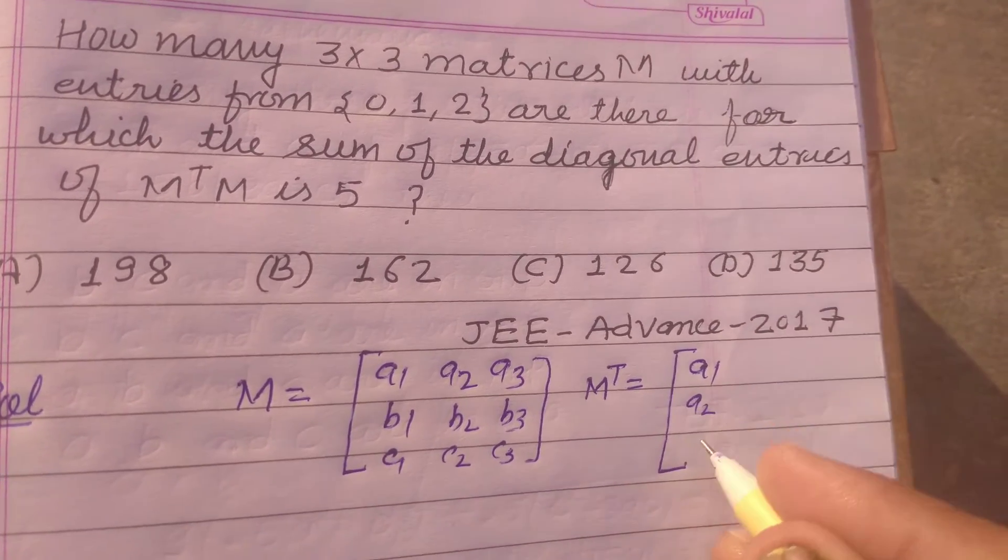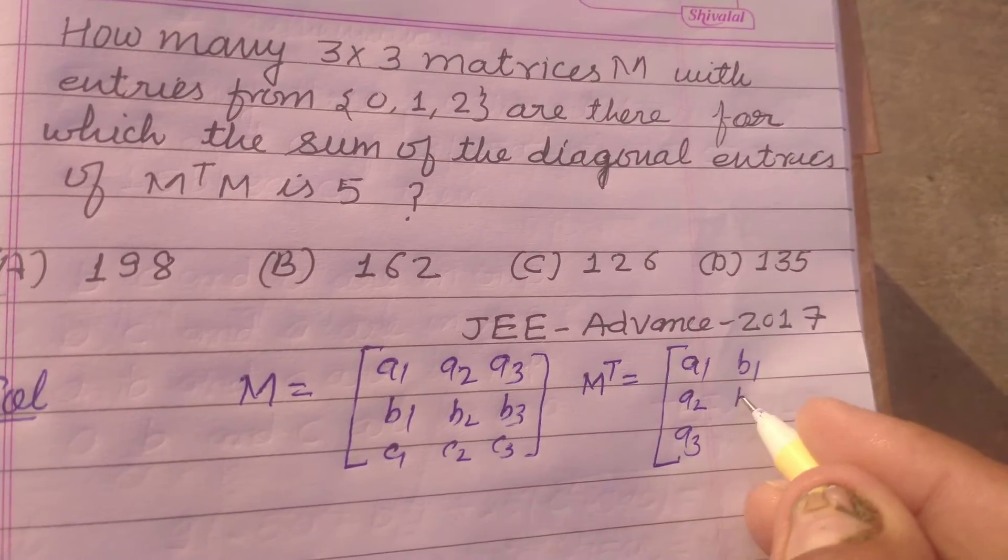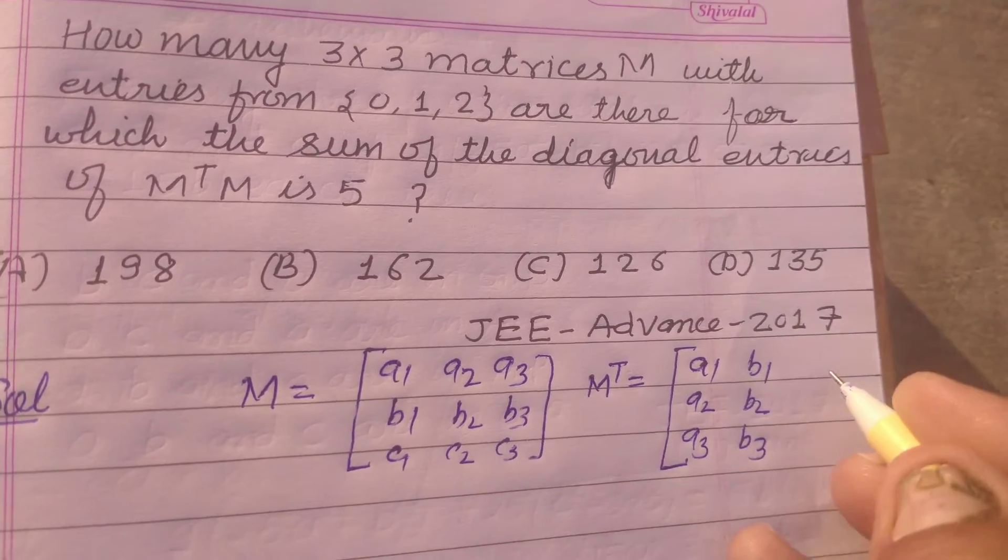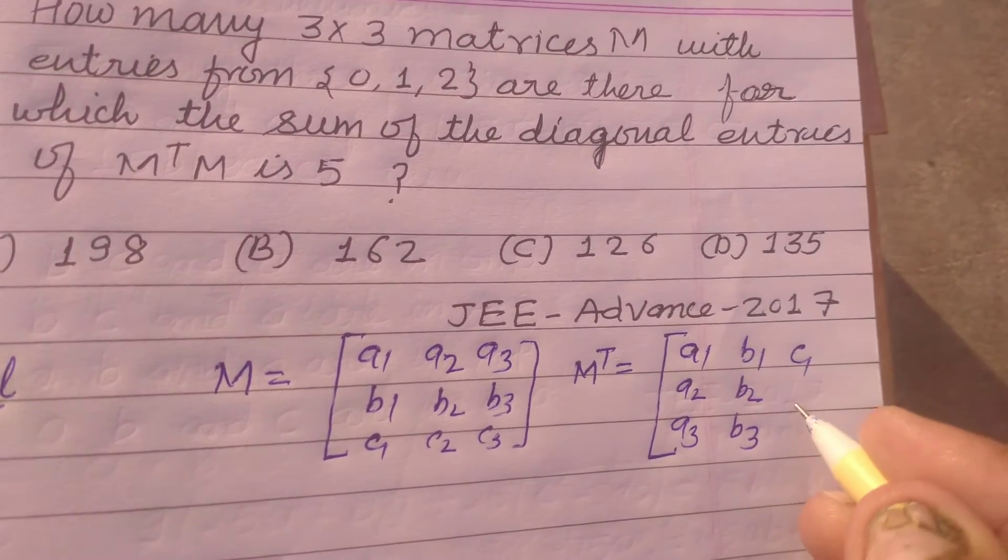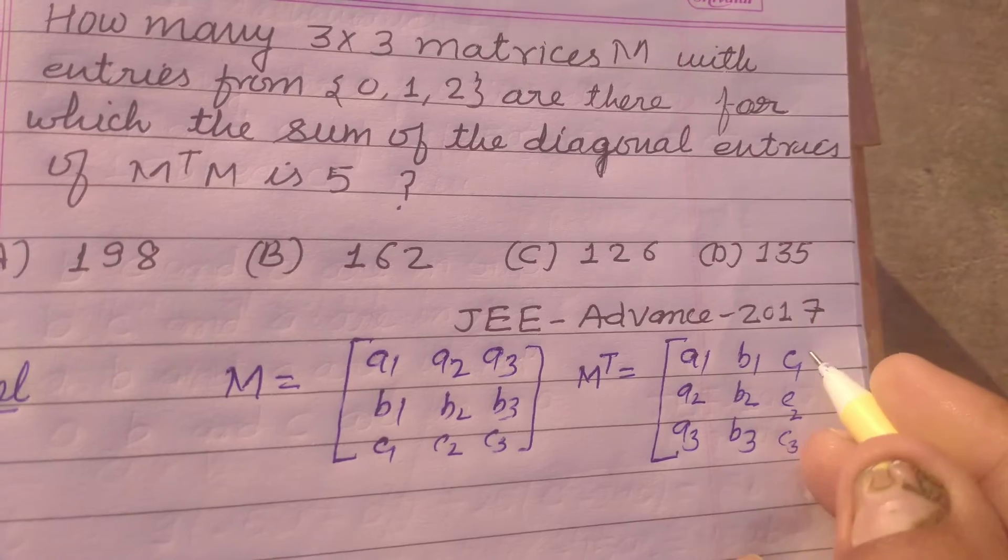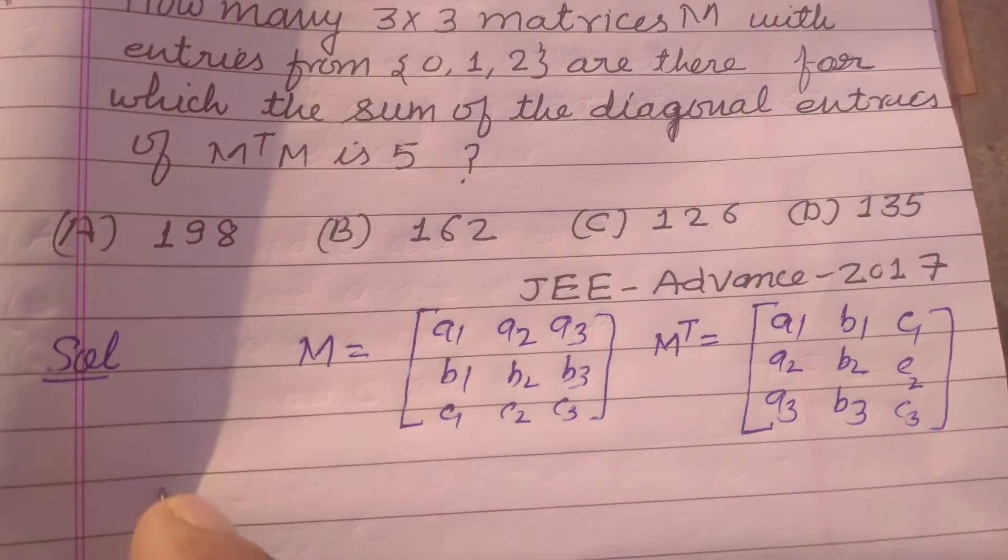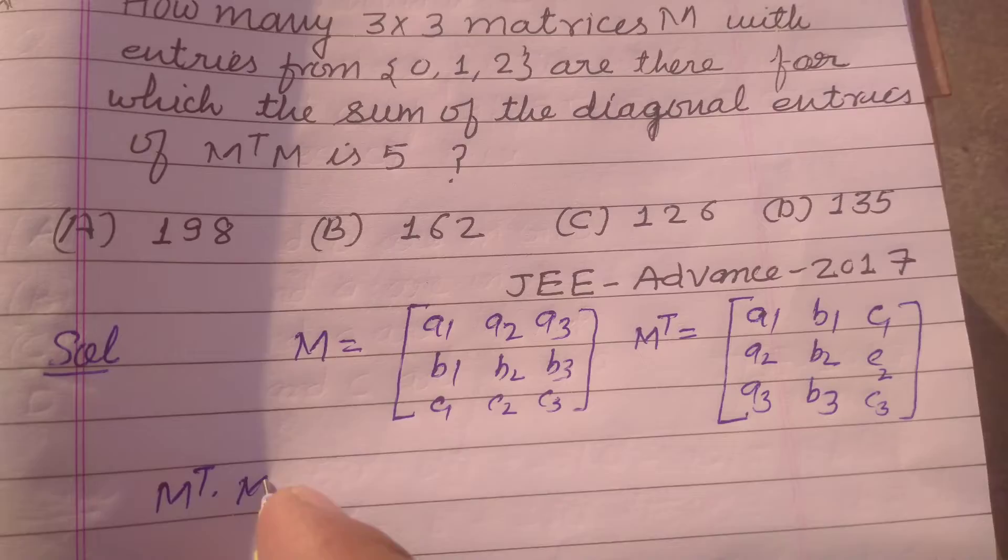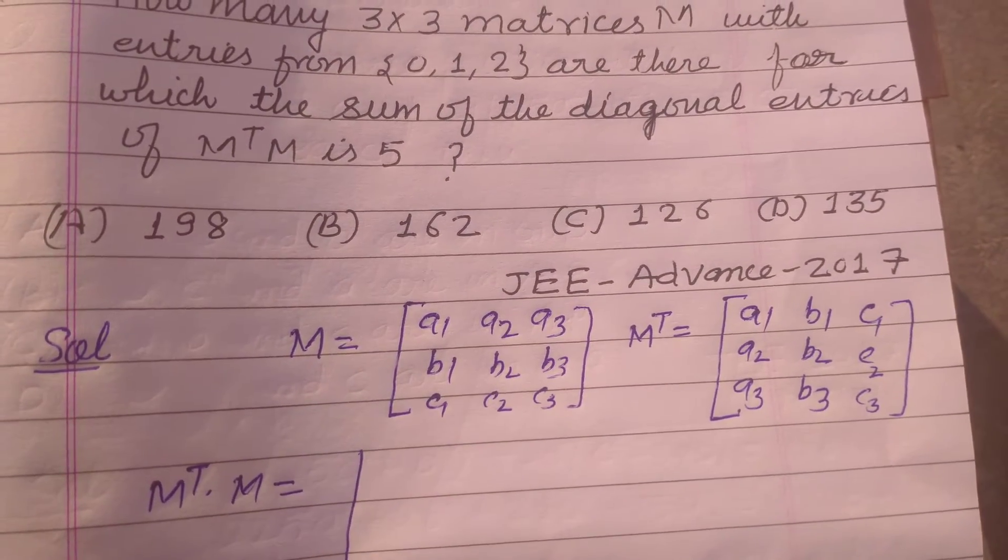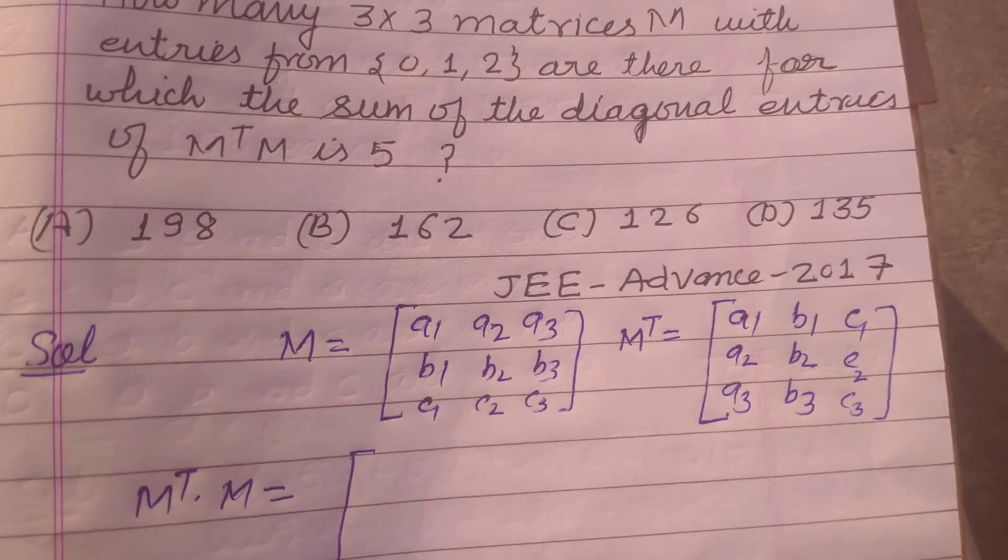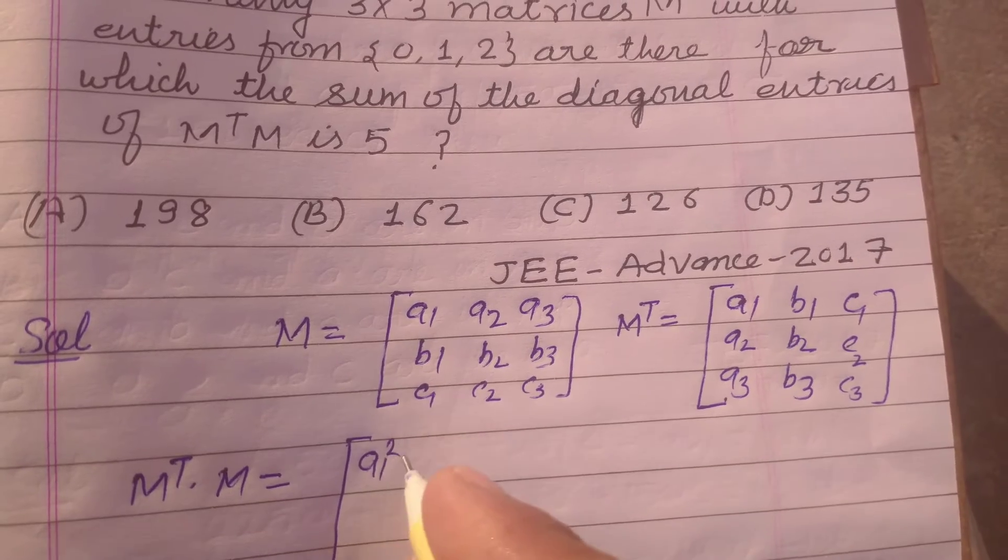And its transpose is MT equal to, we change the row and column mutually, so A1, A2, A3, B1, B2, B3, C1, C2, C3.